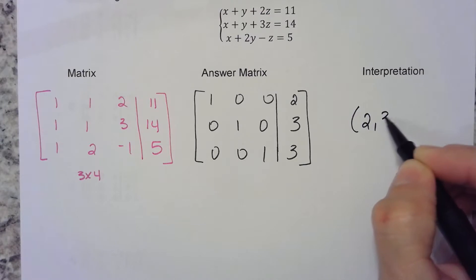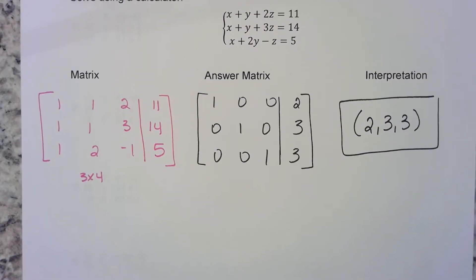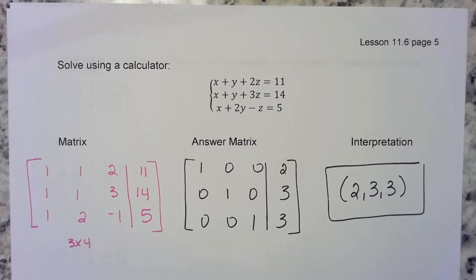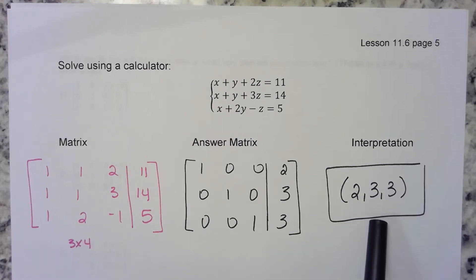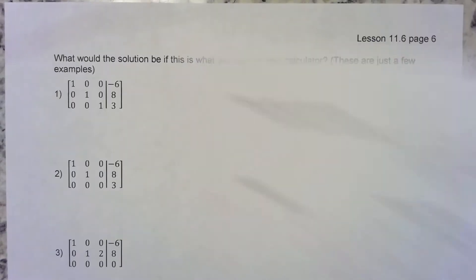This means x is 2, y is 3, z is 3, so my solution is the point (2, 3, 3). If on a test I ask you to solve using a calculator, I need to see on your paper these three things, otherwise you won't get credit for it.